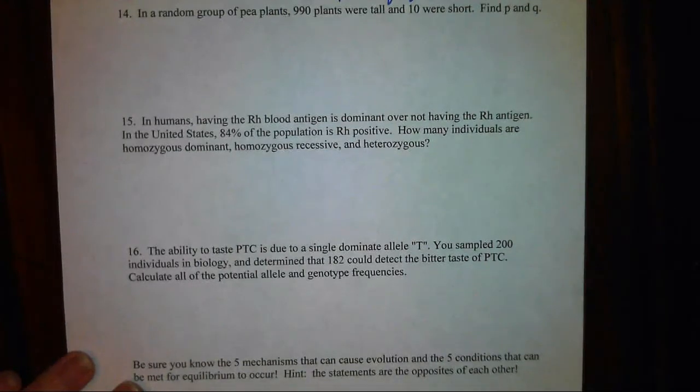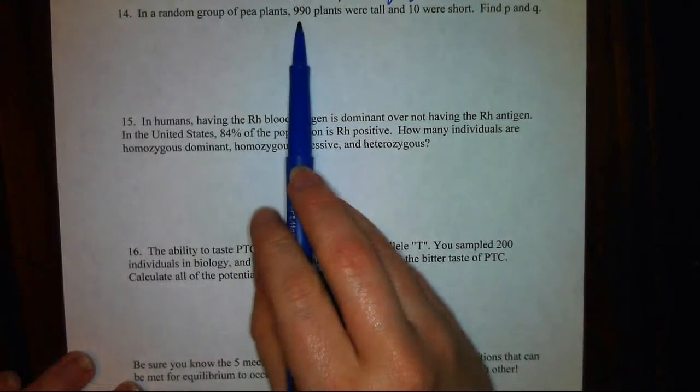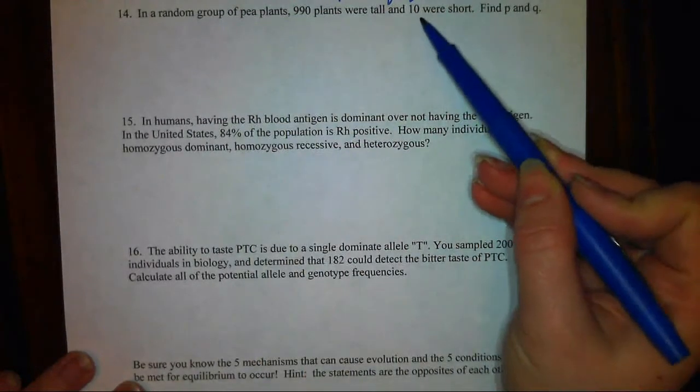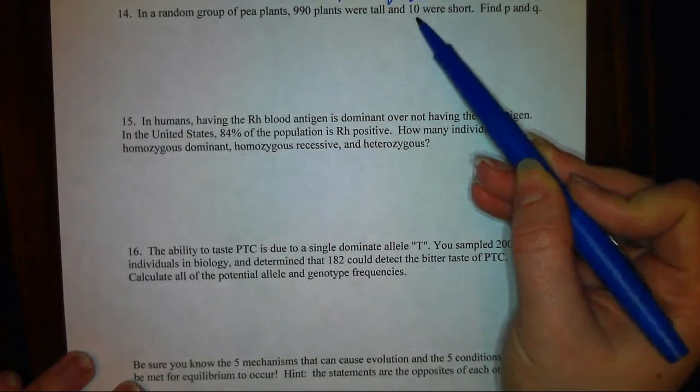Hopefully you're thinking to yourself that a pea plant that's tall could be tall because it's homozygous dominant, or it can be heterozygous. And there's no way for me to split up this 990 to tell me which amount falls into each group. So let's focus on the short plants instead. I know for sure that the 10 short plants must have the genotype of being homozygous recessive.